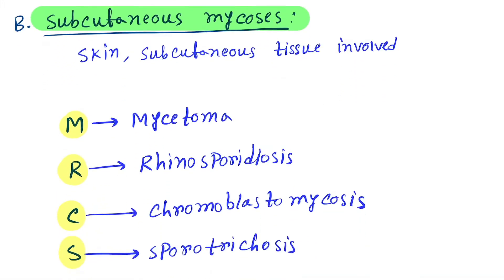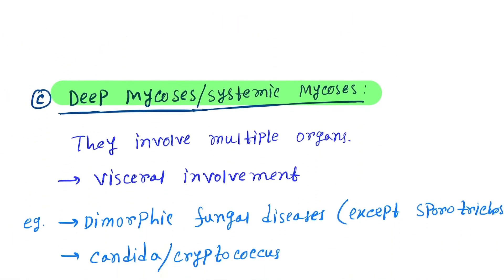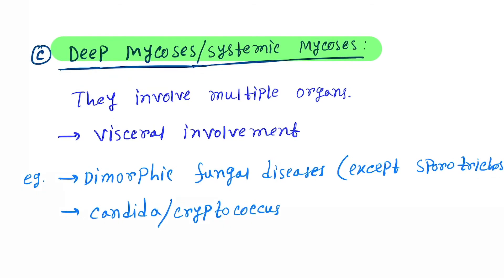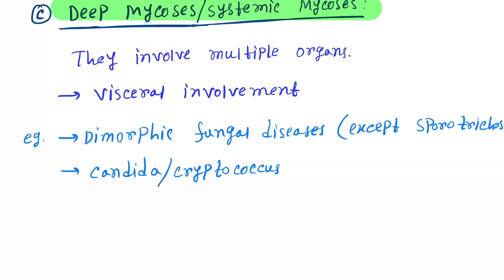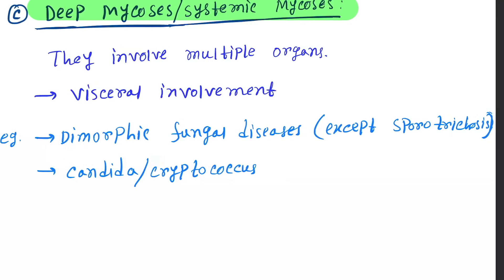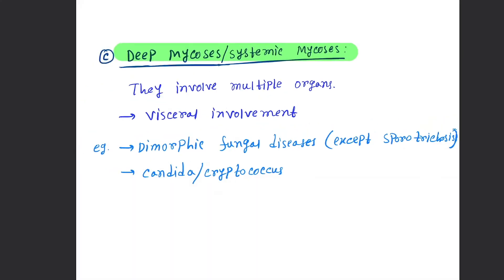Subcutaneous mycoses is done. Next is deep mycoses or systemic mycoses. They involve multiple organs, so viscera are involved - visceral involvement. Examples are dimorphic fungal diseases and Candida and Cryptococcus. Here you have to remember the dimorphic fungal diseases except sporotrichosis.